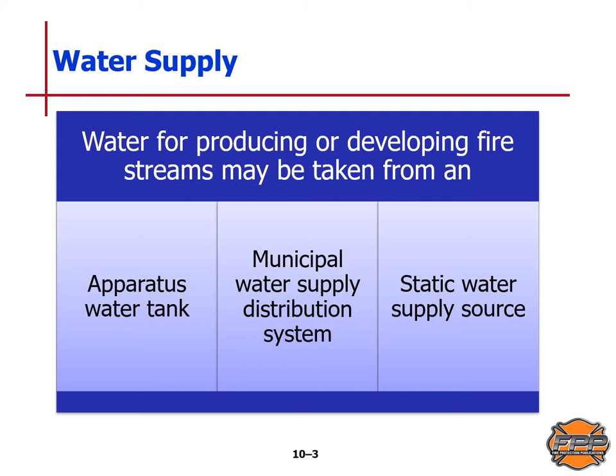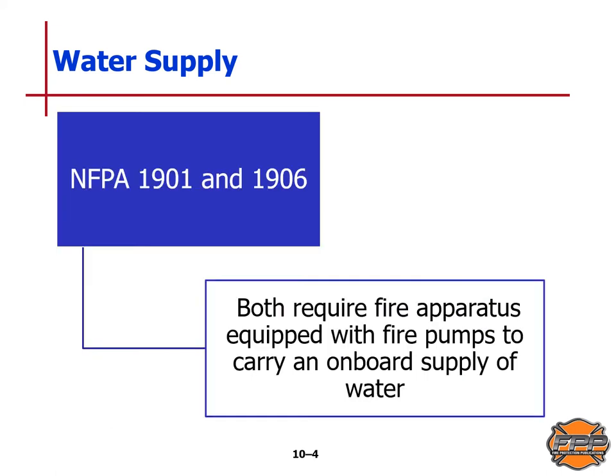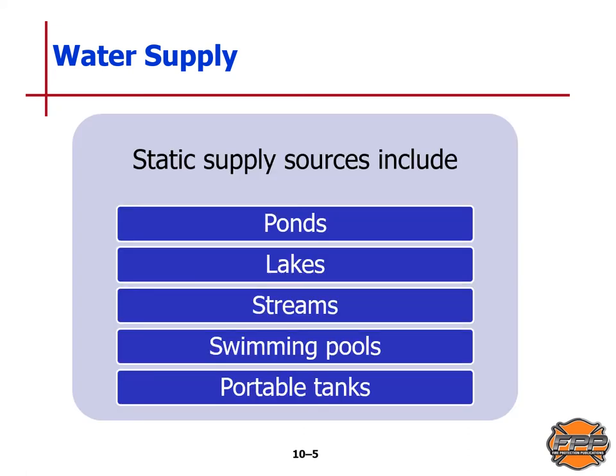Let's talk about water supply. Water for producing or developing fire streams may be taken from an apparatus water tank, a municipal water supply distribution system, or a static supply source. NFPA Standard 1901 and Standard 1906 both require fire apparatus to be equipped with fire pumps to carry an on-board water supply. Static supply sources include ponds, lakes, streams, swimming pools, and portable tanks.